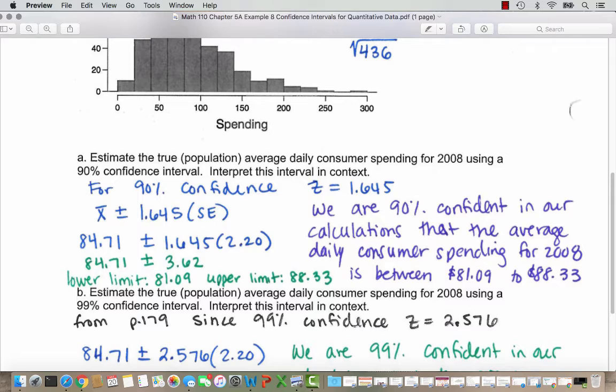To interpret, we put together a sentence. We want to explain that 90% is how confident we are with our calculations. We want to explain that we're predicting average for the whole population, and then give the range of values. The sentence is: we are 90% confident in our calculations that the average daily consumer spending for 2008 is between $81.09 to $88.33.